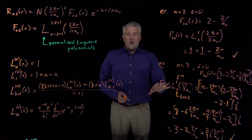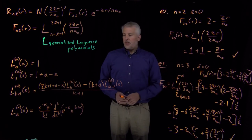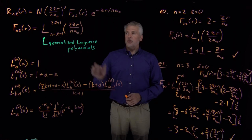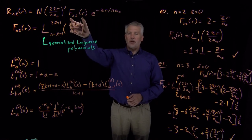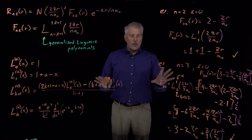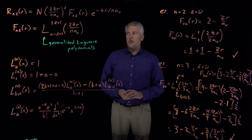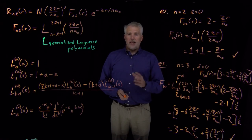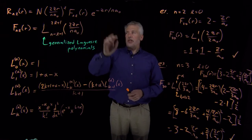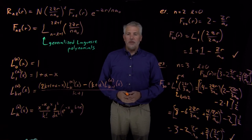What we've seen here is an example of how to use the generalized Laguerre polynomials to find the polynomial term in the radial wave function. Now that we understand where it comes from, for any n and any l value, this equation tells us exactly how to calculate that radial portion of the wave function.